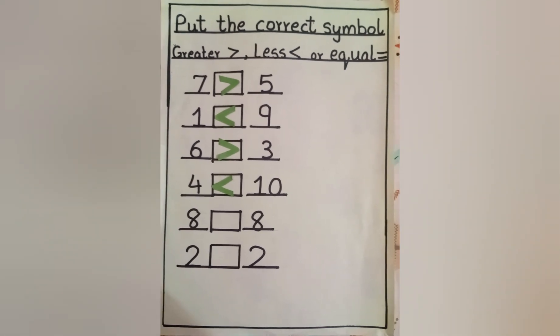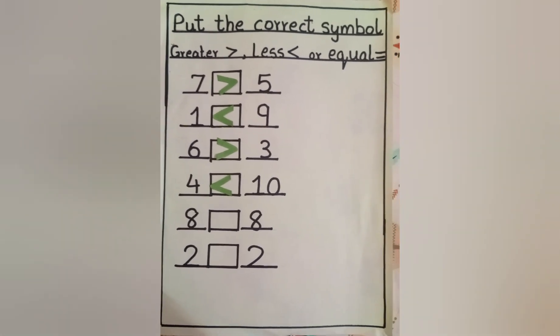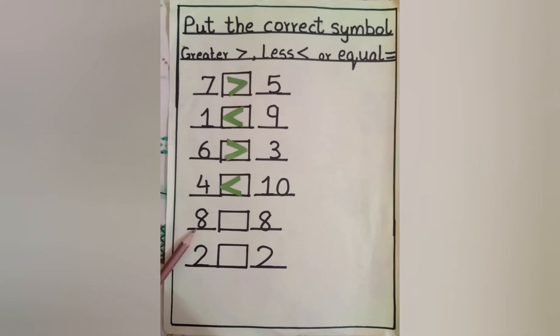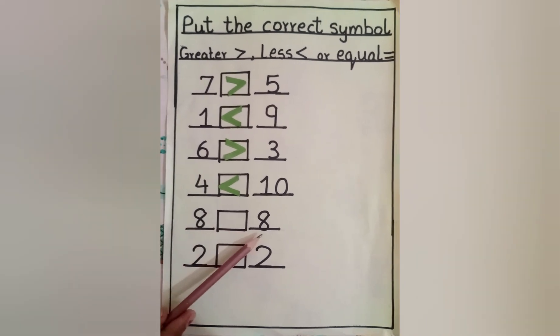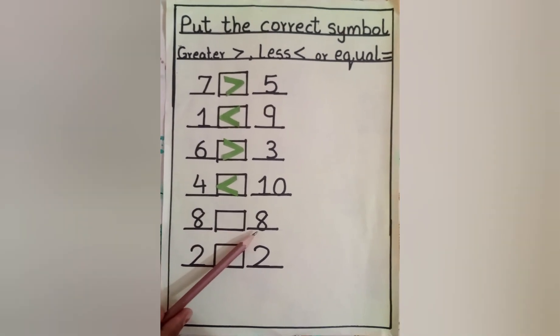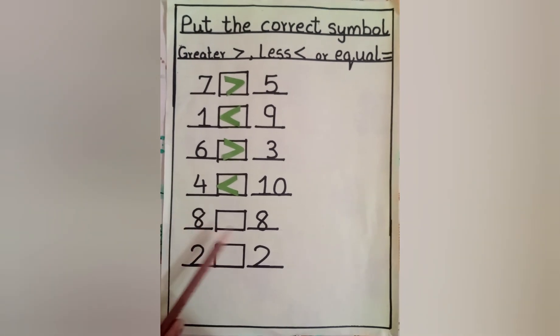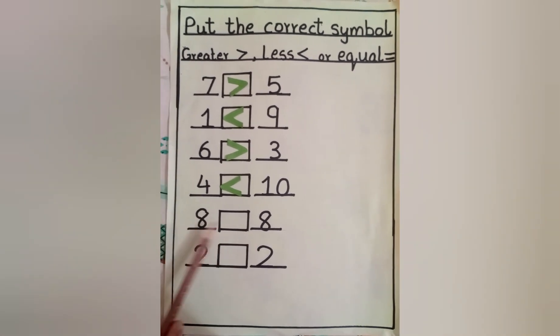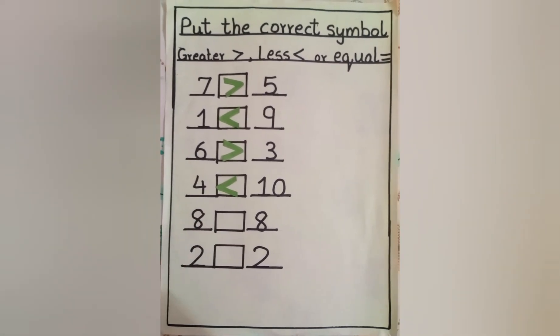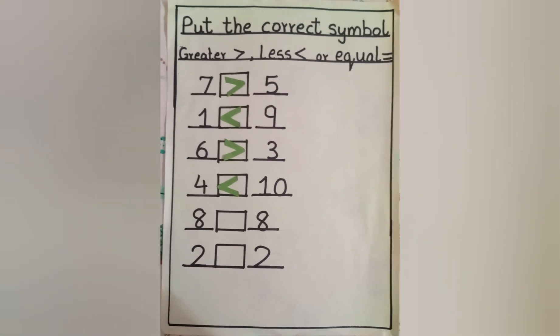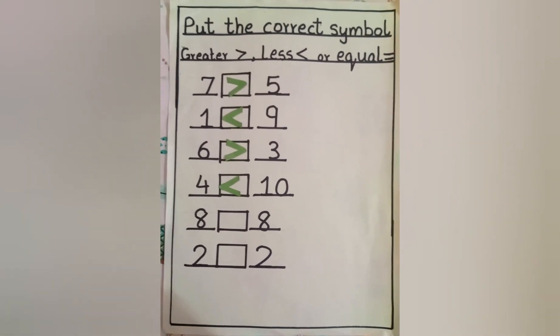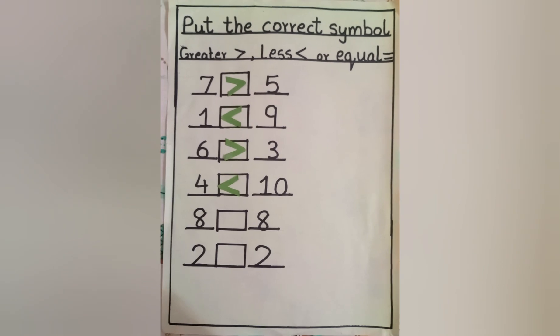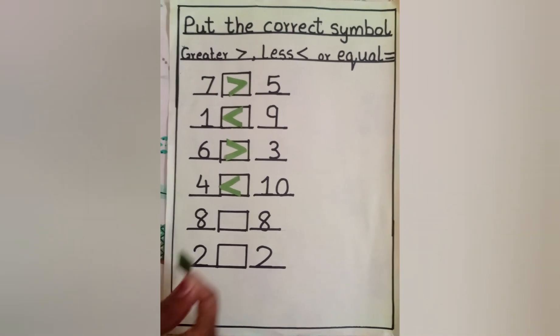Now tell me which number eight is big? This one or that one? No one. Why? Because they are same numbers and crocodile gets confused and then it left this number. So we will put equal sign over here.